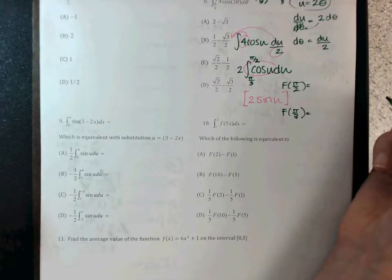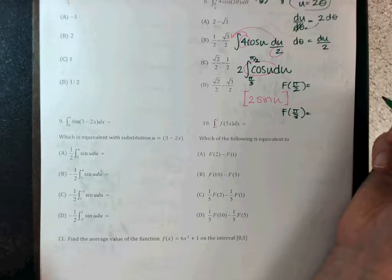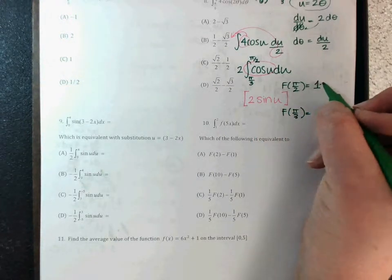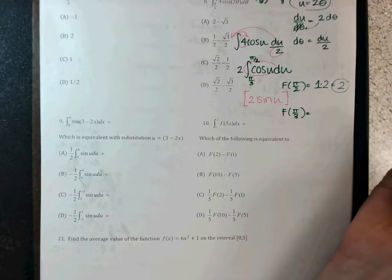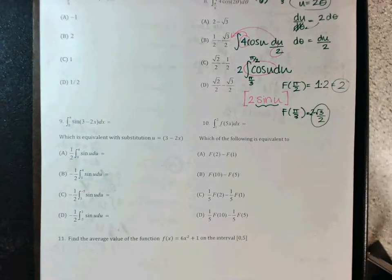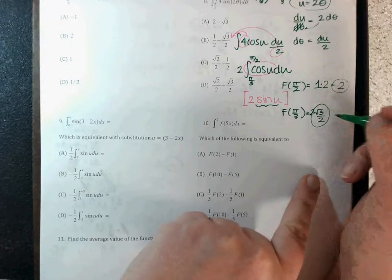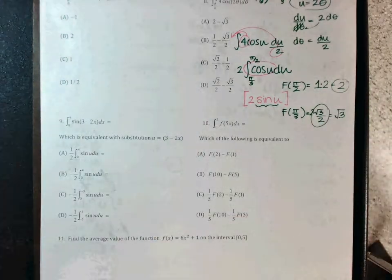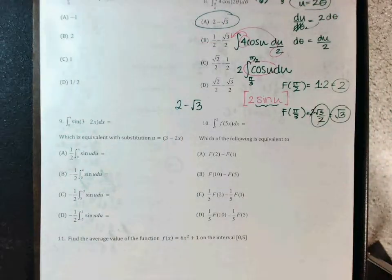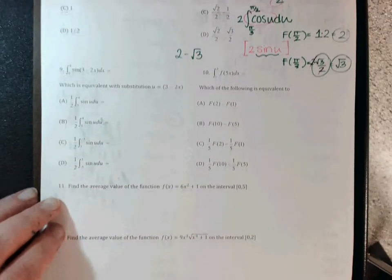Evaluate: at pi/2, using the hand trick, sine(pi/2) = 1, times 2 gives 2. At pi/3 (your pointer finger), sine is below the bend, so sine(pi/3) = root 3 over 2, times 2 gives root 3. Then top minus bottom: 2 minus root 3, which is answer choice A.